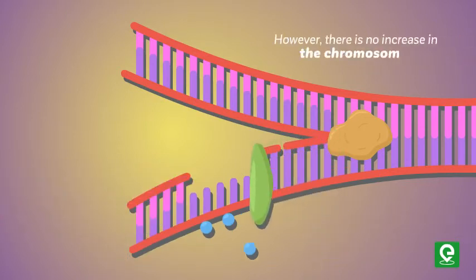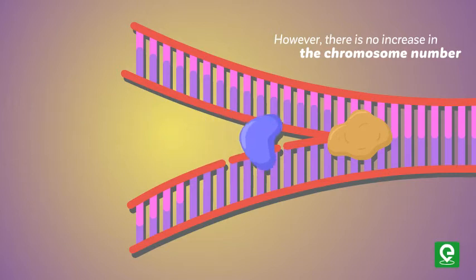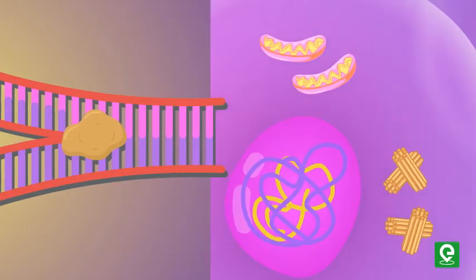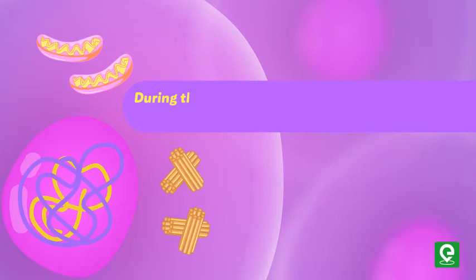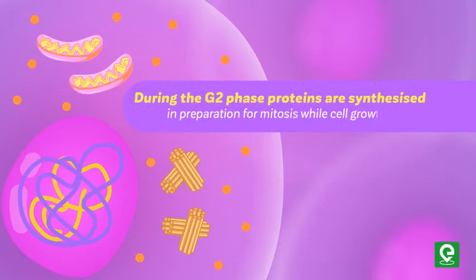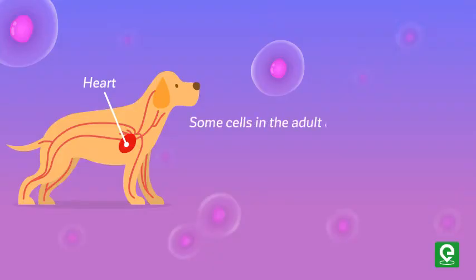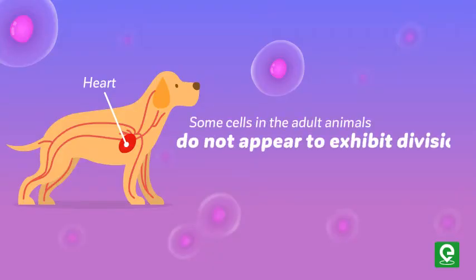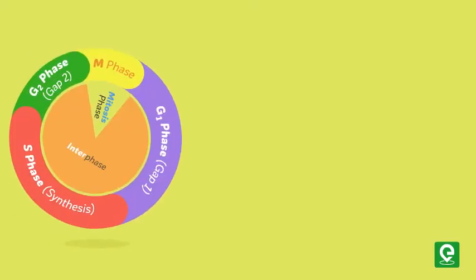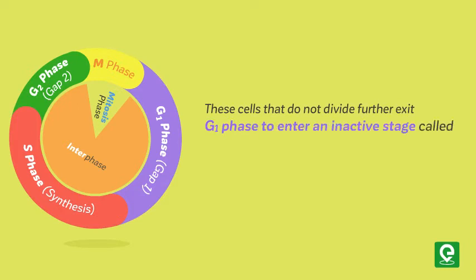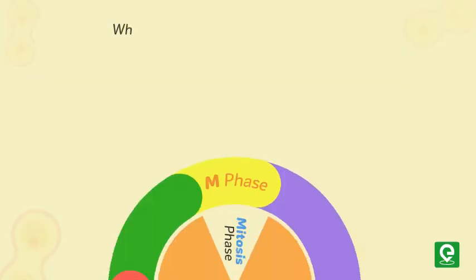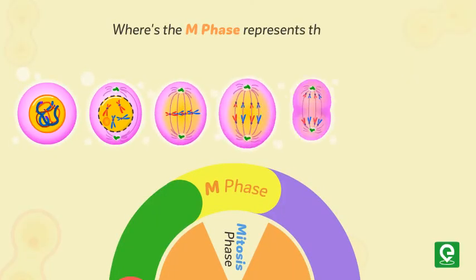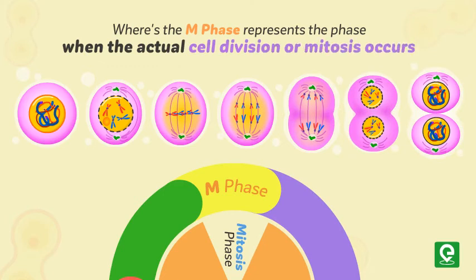During the G2 phase, proteins are synthesized in preparation for mitosis while cell growth continues. Some cells in adult animals do not appear to exhibit division, for example heart cells. These cells that do not divide further exit G1 phase to enter an inactive stage called the quiescent stage (G0) of the cell cycle. Whereas the M phase represents the phase when the actual cell division or mitosis occurs.